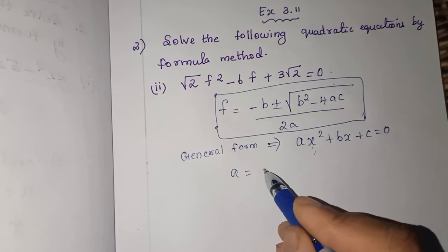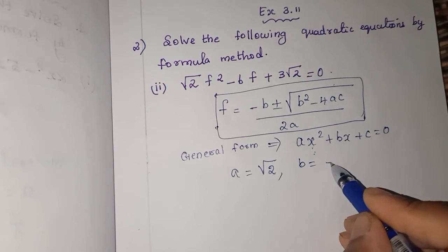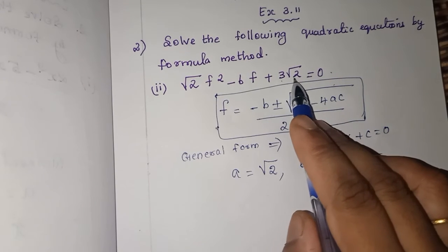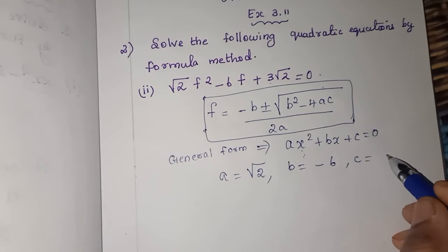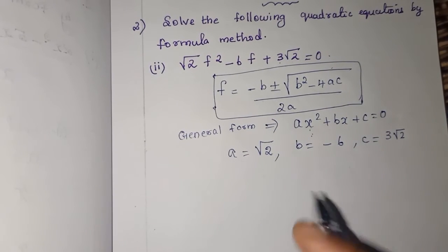What is the a value here? a value is √2. b value is -6. c value is 3√2. Now we are ready to apply the values.